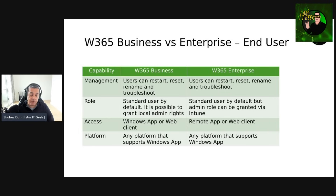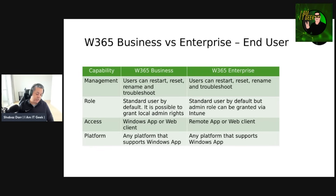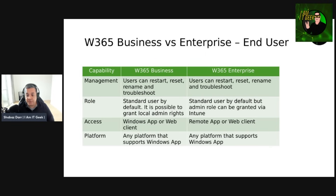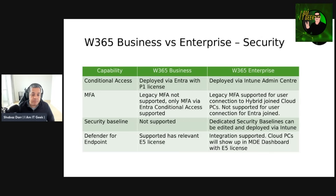Talking about the role capability: standard users are the default, so there's no local admin for Business. It is possible to grant local admin rights, however it's not recommended and not a best practice. For Enterprise, standard users are again the default, but admin role can be granted via Intune policy. For access capability, Business users use the Windows app or web client, and the same applies to Enterprise — Windows app or web client. From a platform perspective, any platform that supports the Windows app or a supported browser can be used for both.